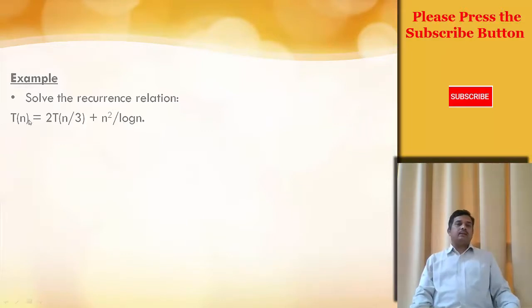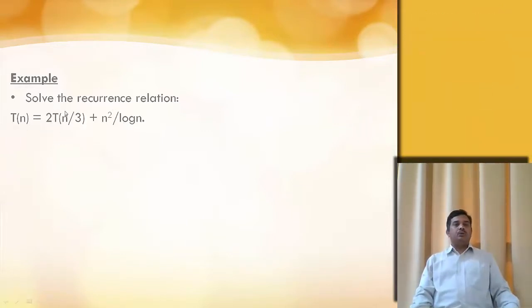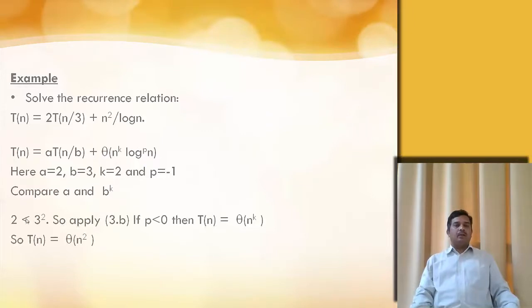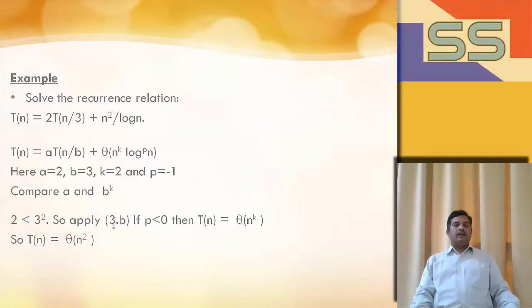Solve the recurrence relation T(n) = 2T(n/3) + n²/log(n). Comparing and finding values: a = 2, b = 3, k = 2, and p = -1. Comparing a and b^k: 2 is less than 3² = 9. Apply formula 3b because p is less than 0. The result is T(n) = Θ(n^k). So the complexity according to Master's Theorem becomes Θ(n²).